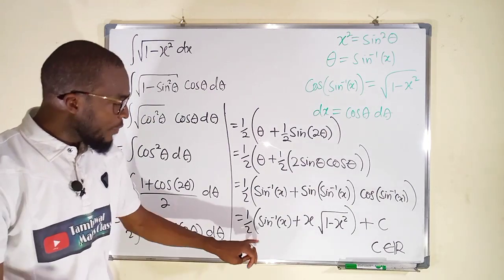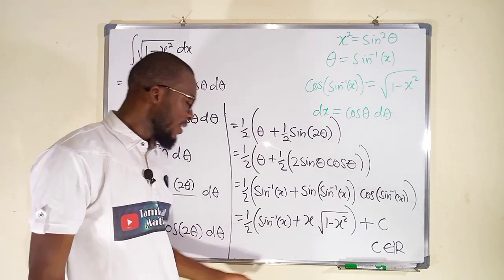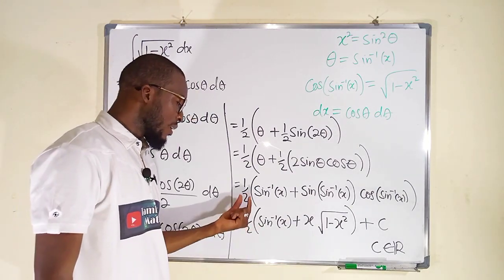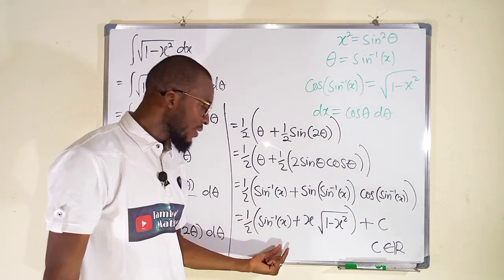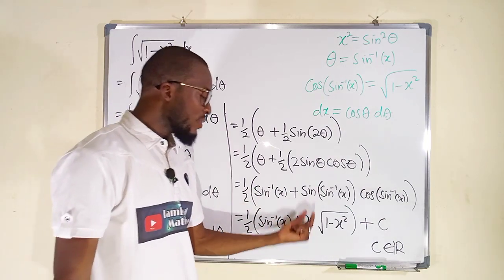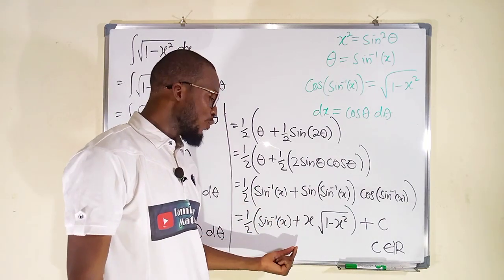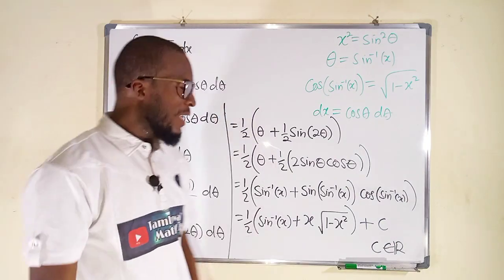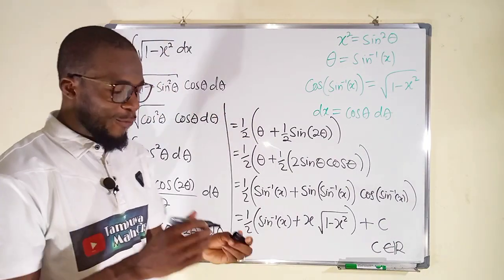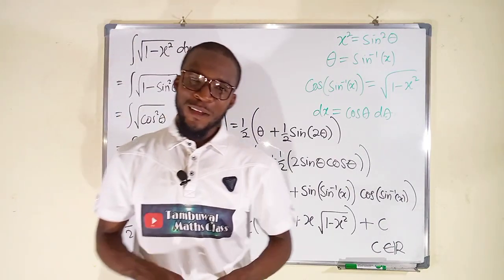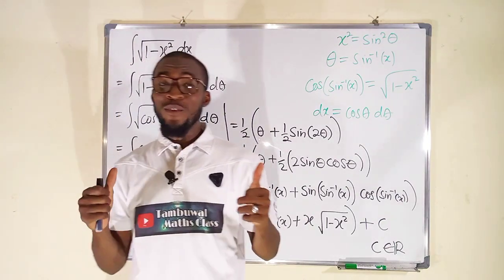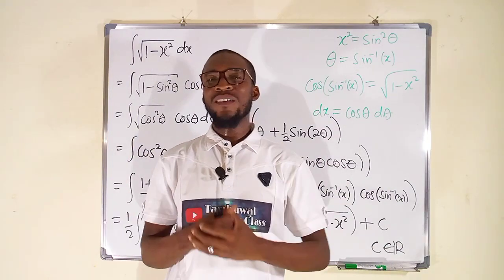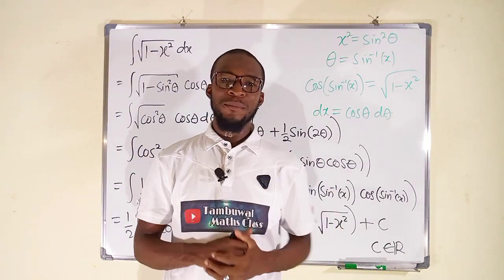If you like, you can distribute 1 over 2 inside, and you end up having half of sine inverse of x plus x divided by 2 times square root of 1 minus x squared. And this is all I have for you today. Thank you for watching. Don't forget to subscribe to my YouTube channel for more exciting videos. Bye-bye.